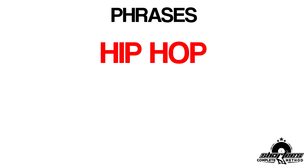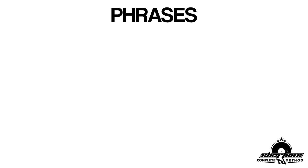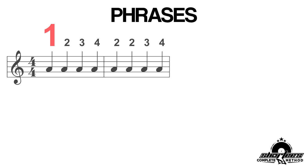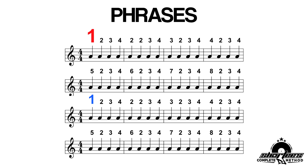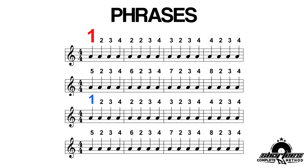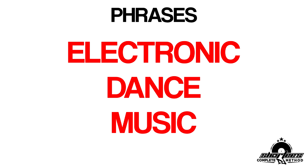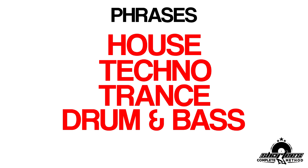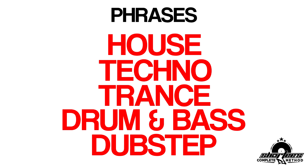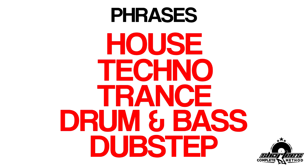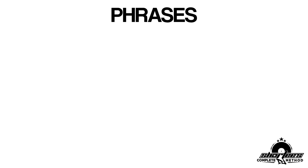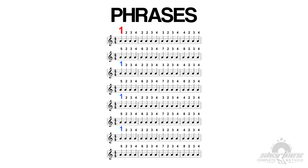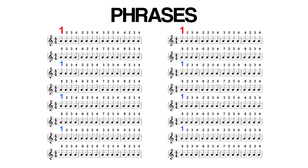In hip-hop, rock, pop, and other vocal-based music, the phrases are generally 2, 4, 8, or 16 bars long. In electronic dance music, such as house, techno, trance, drum and bass, and dubstep, phrases are generally a bit longer with 8, 16, 32, or 64 bar phrases.